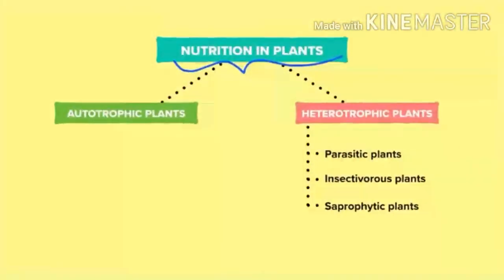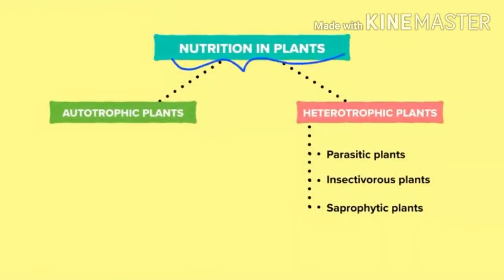Nutrition in plants is mainly of two types: autotrophic plants and heterotrophic plants. Heterotrophic plants are again of three types: parasitic plants, insectivorous plants, and saprophytic plants.